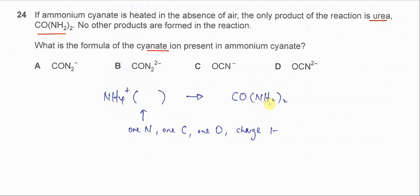We put urea on the product side and we know that on the right hand side it has one carbon, one oxygen, two nitrogen, and four hydrogen.